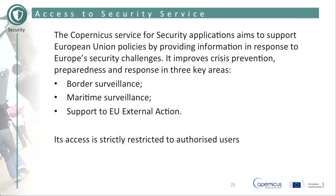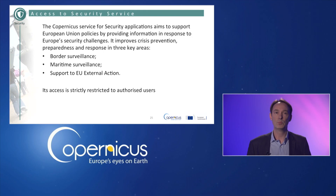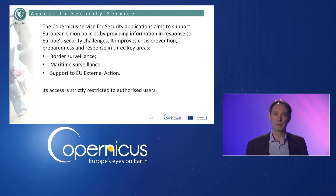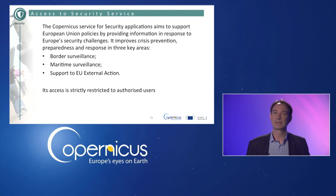The last of the six services is the Copernicus Security Service. It aims to support European Union policies by providing information in response to Europe's security challenges. It improves crisis prevention, preparedness and response in three key areas: border surveillance, maritime surveillance and support to European Union external action. Its access is strictly restricted to authorised users.